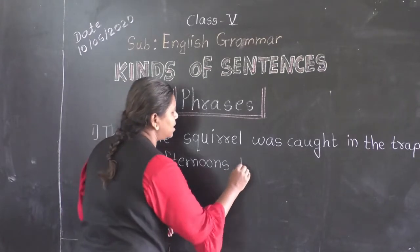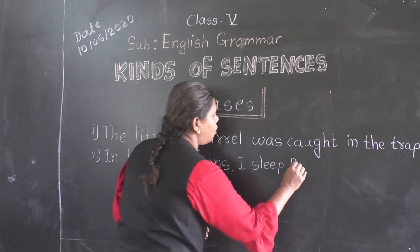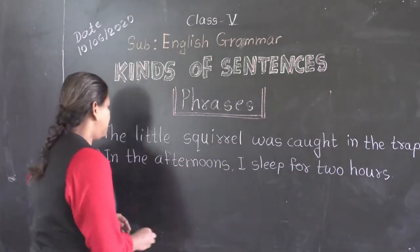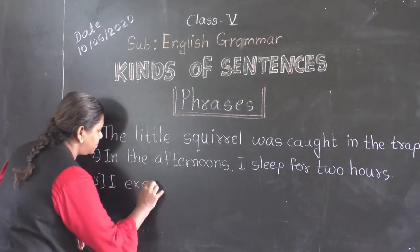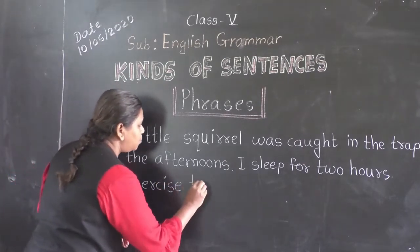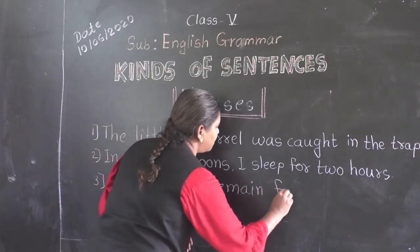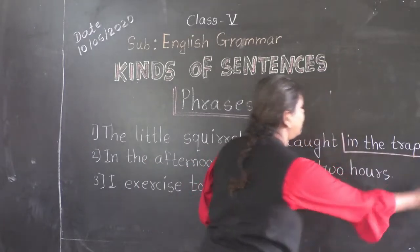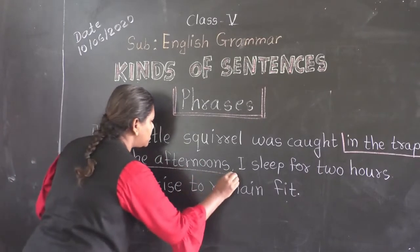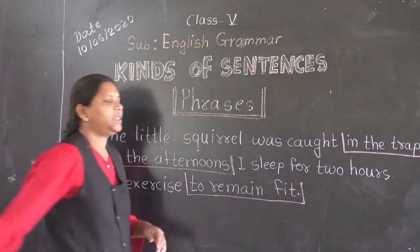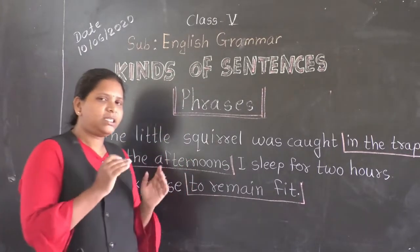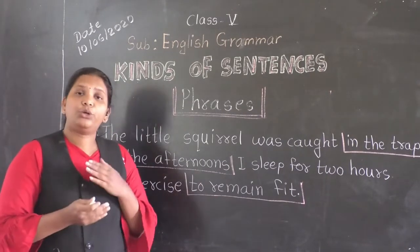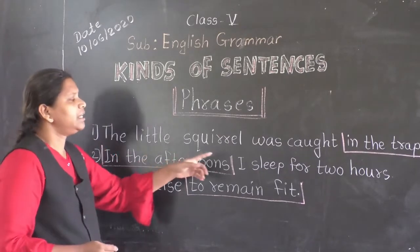In the afternoons I sleep for two hours. And one more sentence: I exercise to remain fit. Now I will highlight some words in these sentences: 'in the trap,' 'in the afternoons,' 'to remain fresh.' These highlighted words make some sense but do not make a complete sense.